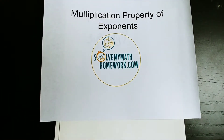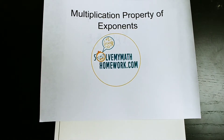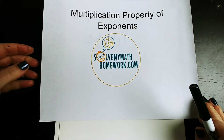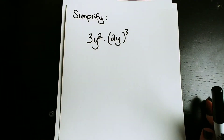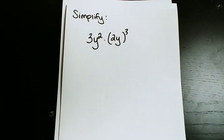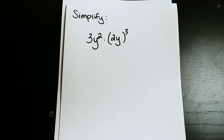Hey there and welcome to another edition of Solve My Math Homework Video Solutions. Today we have a simplification problem, so we're going to simplify an expression using the multiplication property of exponents. We have: simplify the quantity 3y to the second power times the quantity in parentheses 2y, all raised to the third power.